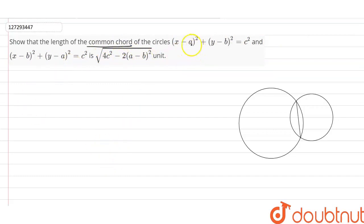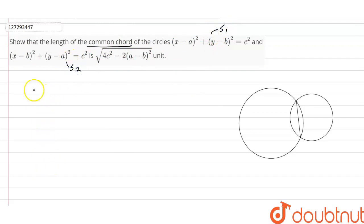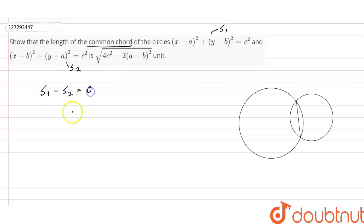So, what do we know? The common chord equation uses the formula: S1 minus S2 equals zero, where S1 and S2 represent the two circle equations.